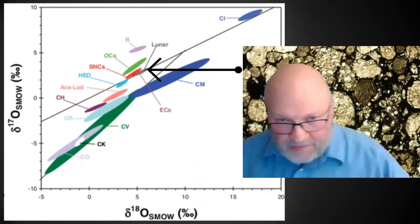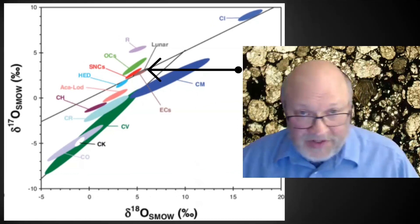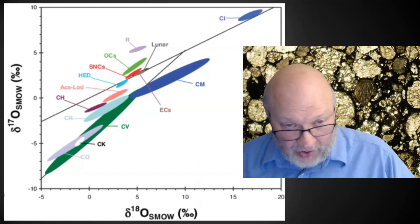We can see that lunar materials fall along the same line too, because the Moon has the same oxygen isotopic composition as the Earth. We can see that Mars is a little bit above the line.